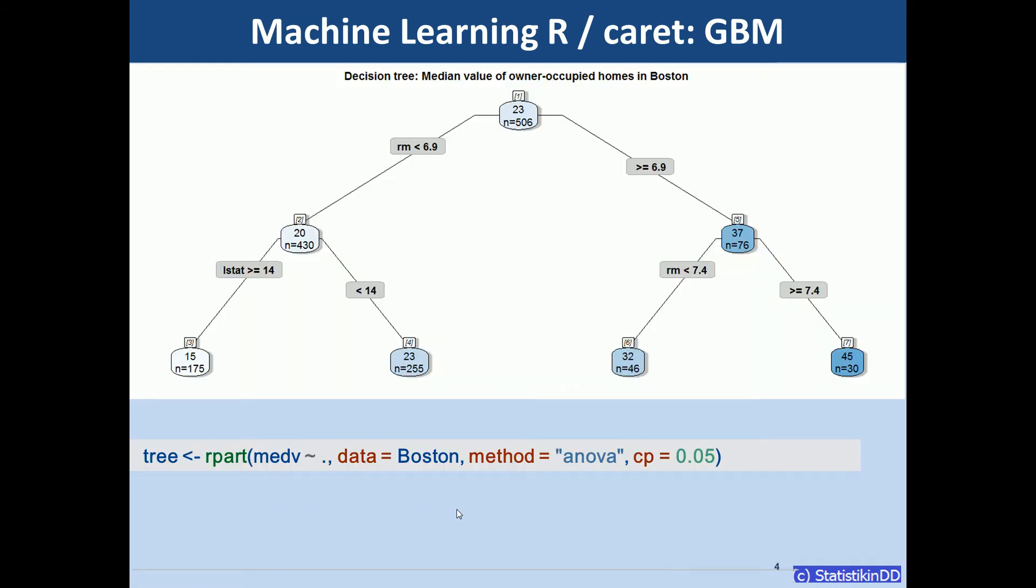We start simple with a decision tree. We see that the total average is 23,000 US dollars. And the strongest predictor for the first split is the rooms per dwelling. And then as we go to the left we have lower median values of owner-occupied homes. 20,000 here in node 2.